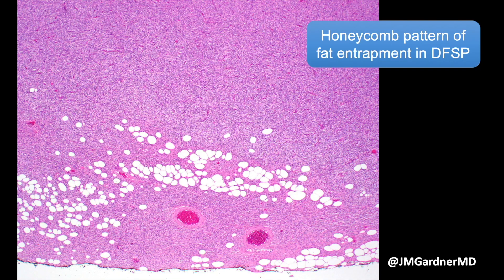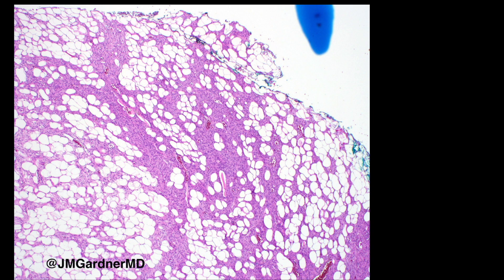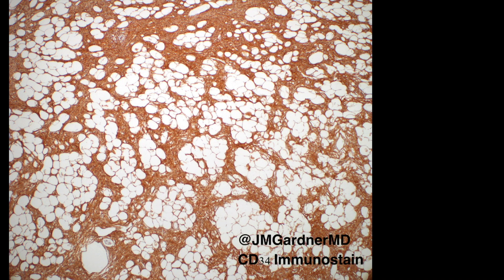Sometimes the subcutis gets completely overrun by tumor, and all you'll see is a tiny bit of fat trapping while the rest looks like solid storiform bland spindle cells. I remember being confused by this in fellowship, but Dr. Weiss explained it's because the tumor has grown all the way to the edge and replaced all the fat. I see this scenario most often in scalp tumors, where the tumor grows down to the galea or periosteum, hits a wall, spreads out laterally, and replaces all the fat except for a tiny remnant.